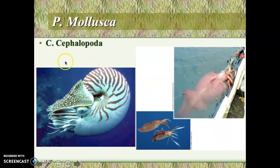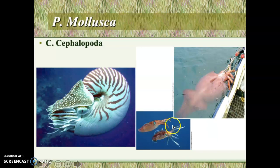The cephalopod mollusks include the squids and the nautilus. The nautilus has a shell, visible on the left, while the squid does not — you can see a very large squid on the right. In the middle is a creature called a cuttlefish, which looks kind of like a squid. The cool thing about the cuttlefish is that it can change the colors on the outside of its body. There's a link to a video on cuttlefish on the class schedule — follow that link to see a cool video.